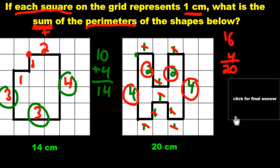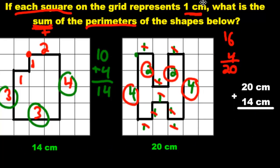Don't click for the final answer yet because we're not done! The question is asking us the sum of the perimeters of both shapes. We've got to add these sums together. So zero plus four, two plus one — and it's centimeters — and that's the answer. 34 centimeters is what we're looking for.